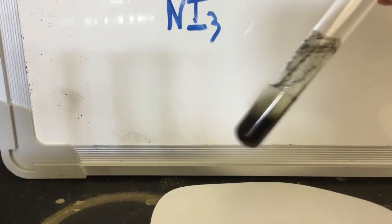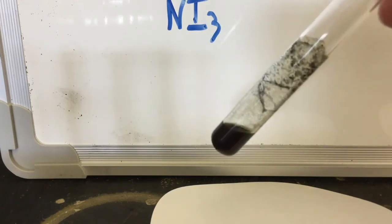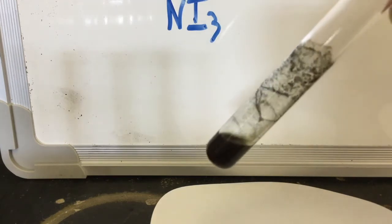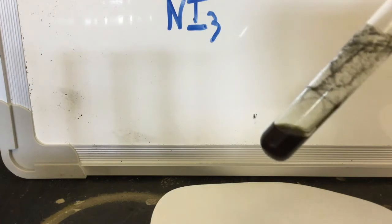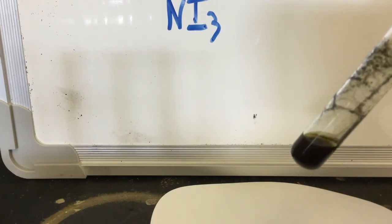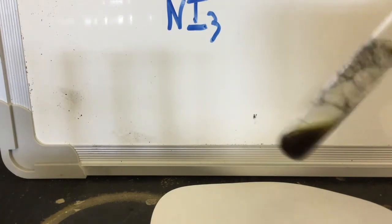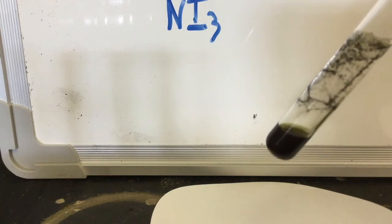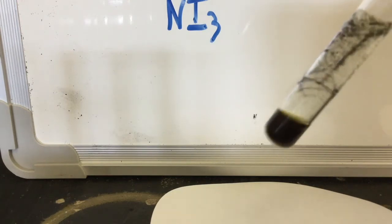I have here a mixture of nitrogen triiodide. I've had you draw the Lewis dot structure for this particular formula before, but I thought you might like to see how interesting this compound is.